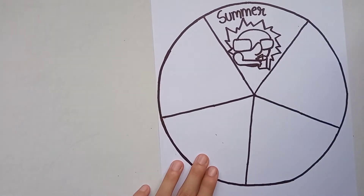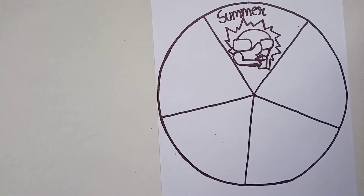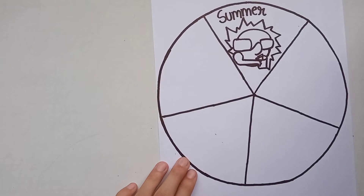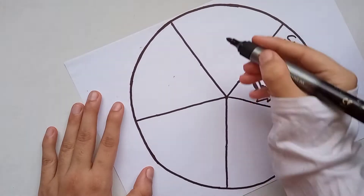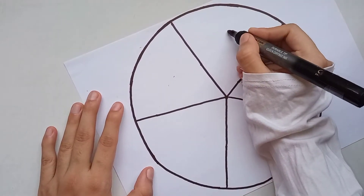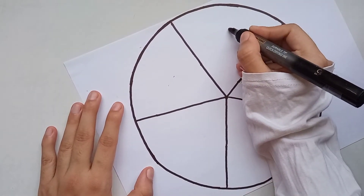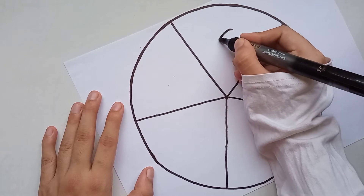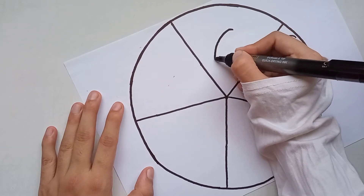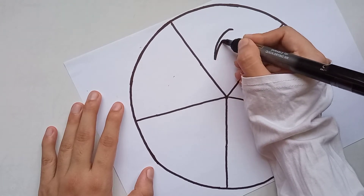Now I will write 'summer' above it. The next season I will draw is autumn season. For autumn season, what comes to your mind? Dry leaves, isn't it? So I will make a leaf.